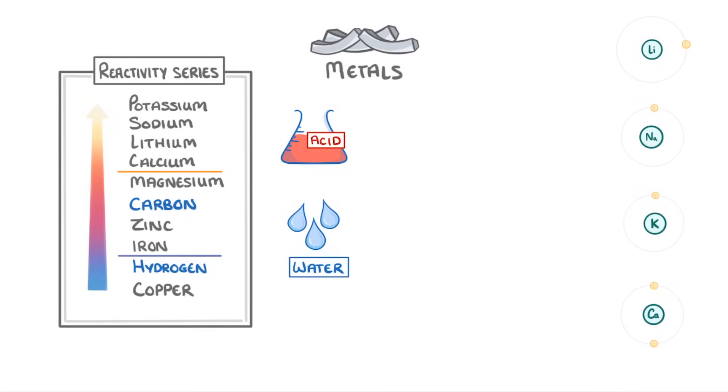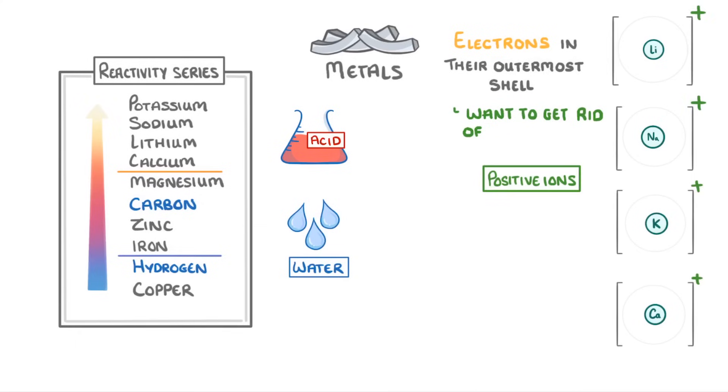If you remember the electron arrangement of metals, what they all have in common is that they have electrons in their outermost shell that they want to get rid of. And so when they react with other substances, they get rid of these outer shell electrons and form positive ions.